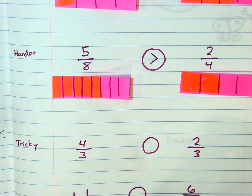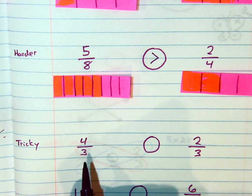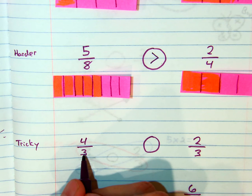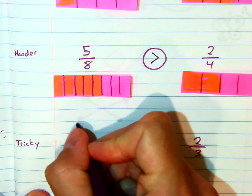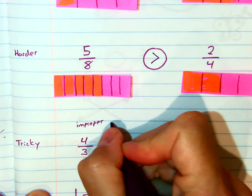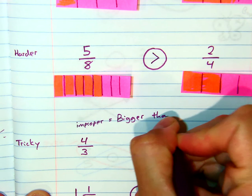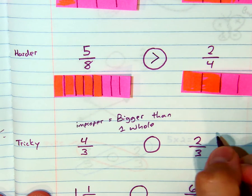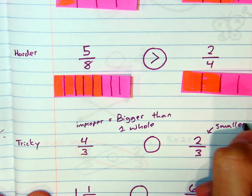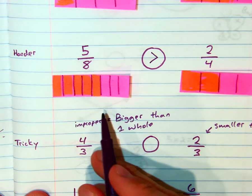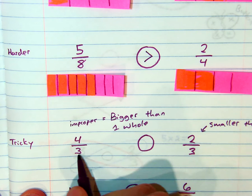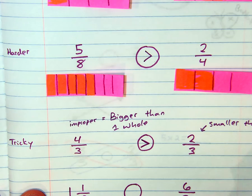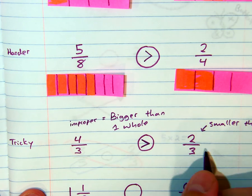Now a tricky one: four-thirds. Is that a proper or improper fraction? Look at the numerator — it's bigger than the denominator, so it's improper, which means it's bigger than one whole. The other fraction is a regular fraction, meaning it's smaller than one. If one is bigger than one whole and the other is smaller than one whole, then four-thirds is greater than the regular fraction.